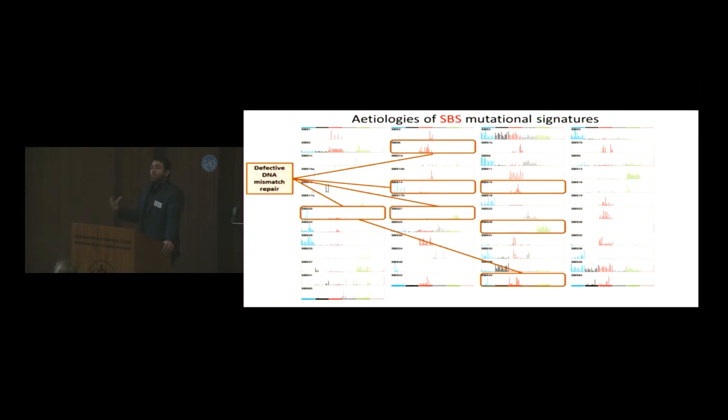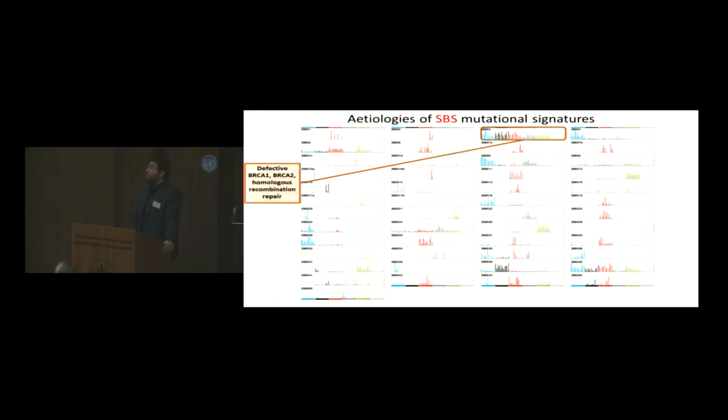One can start looking at things that fail in DNA repair, such as defective DNA repair. Mismatch repair has many signatures, which are caused by different mechanisms. Some of them we understand, some of them we do not. In contrast, failure of homologous recombination, such as mutations in BRCA1 and BRCA2, due to a single signature.